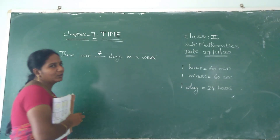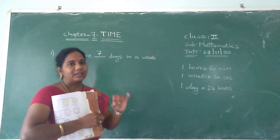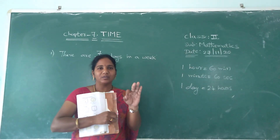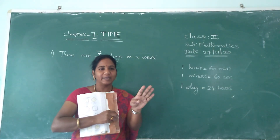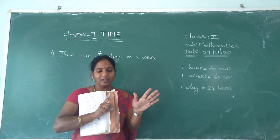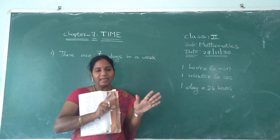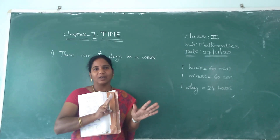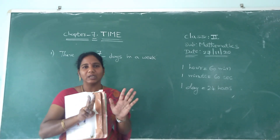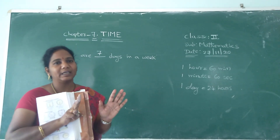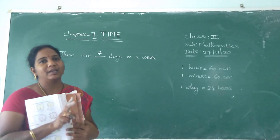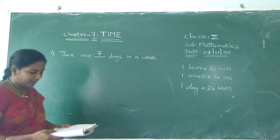What are those? Sunday, Monday, Tuesday, Wednesday, Thursday, Friday and Saturday. So totally how many days are there? Seven days.